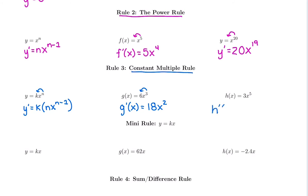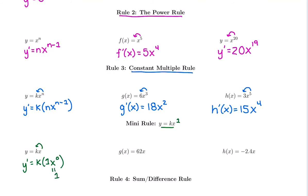For h of x, keep the constant multiple 3 and bring down the 5: 3 times 5 is 15, and x to the 5 minus 1 is x to the 4th. Now a mini rule: if you have just kx, bringing down the power gives k times 1, and x to the 1 minus 1 is x to the 0, which equals 1. So the derivative of kx is just k — the number out front.